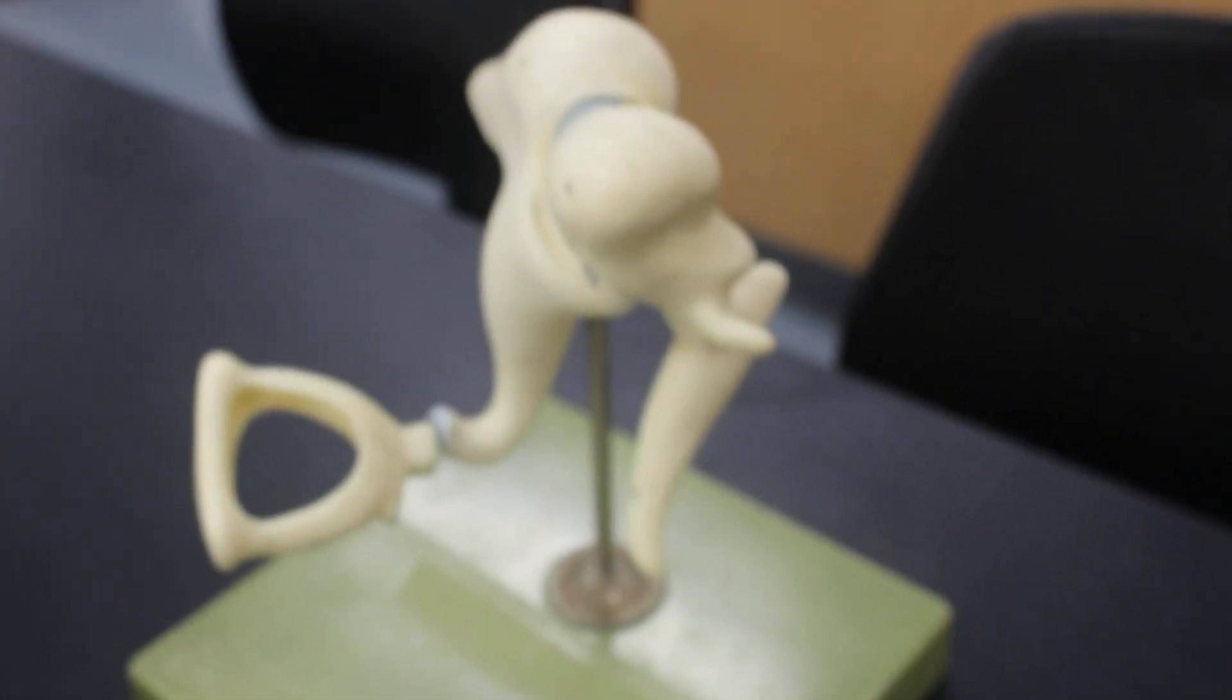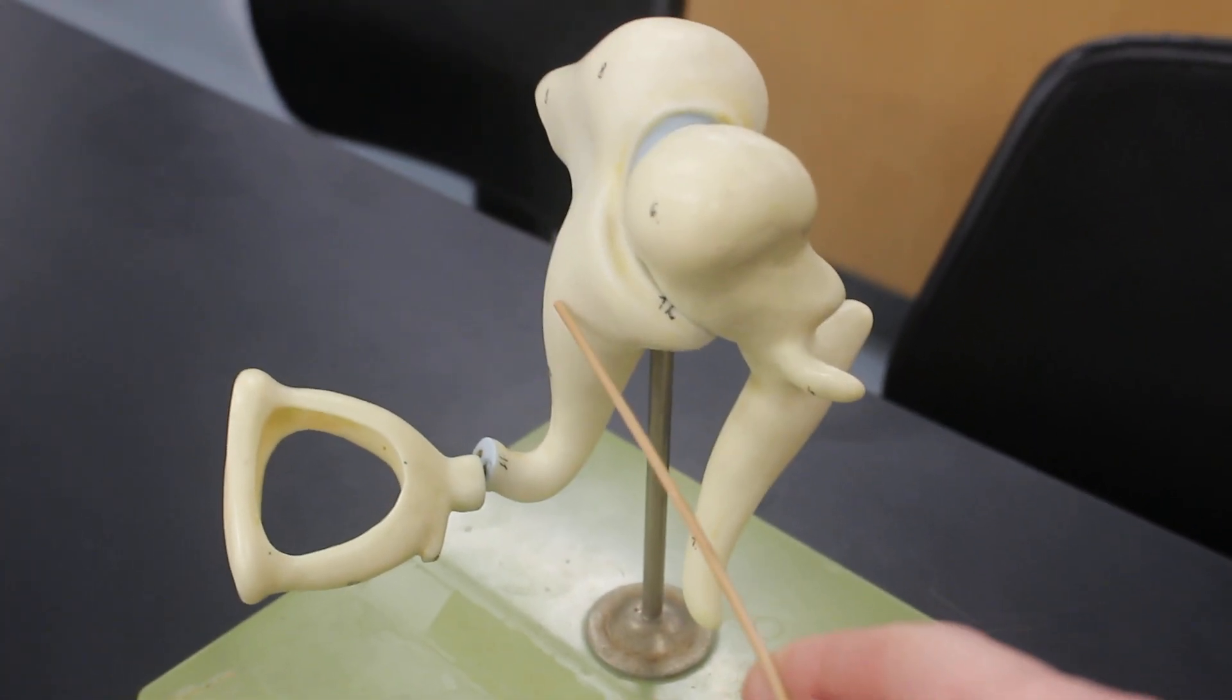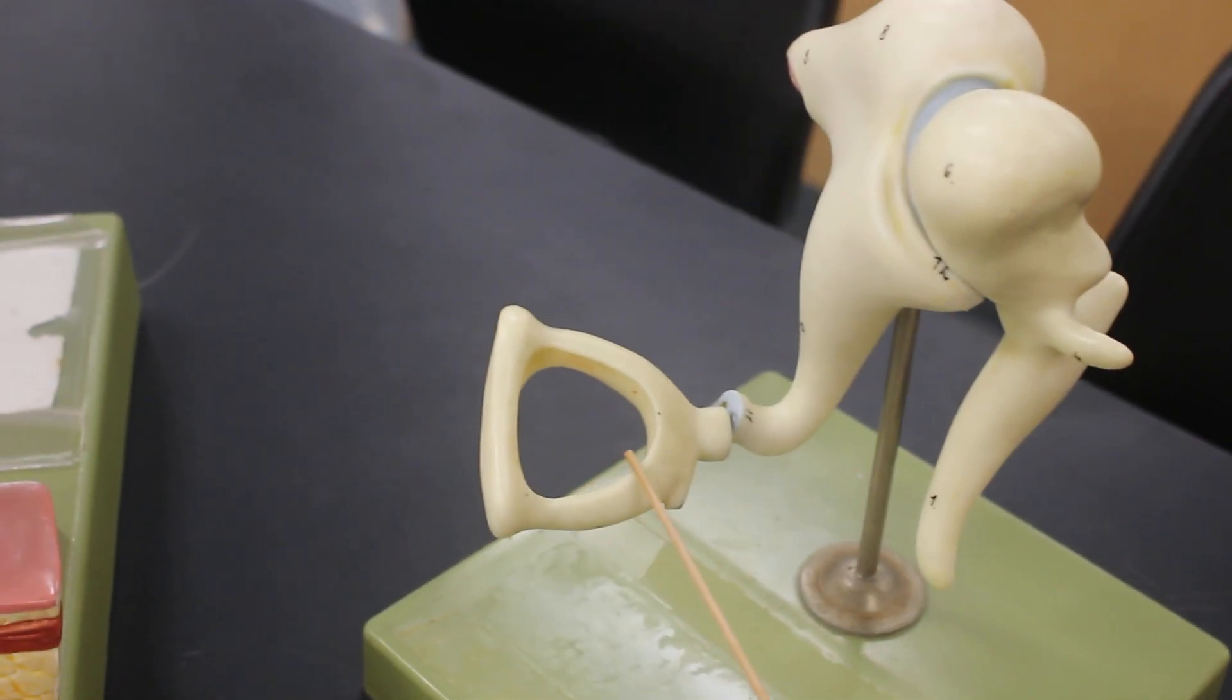This is a closeup of the auditory ossicles: malleus, incus, stapes. The stapes fits into the oval window.